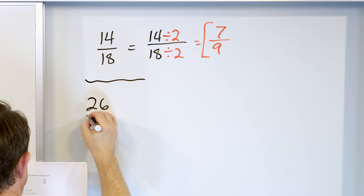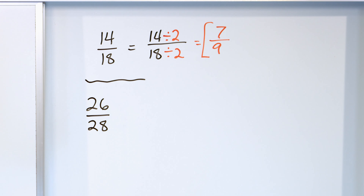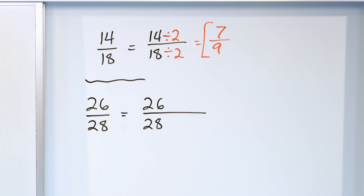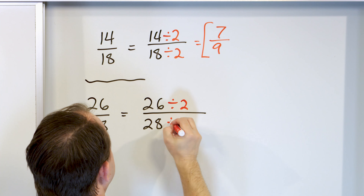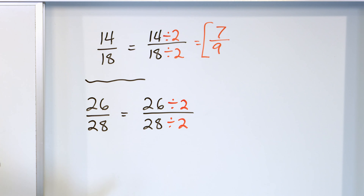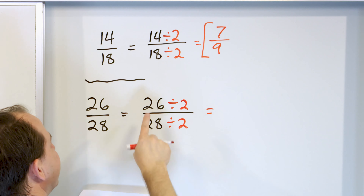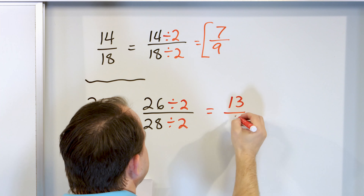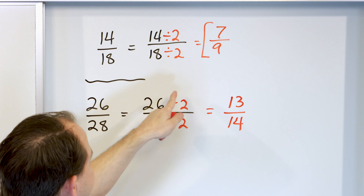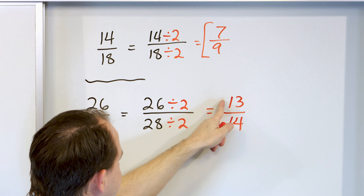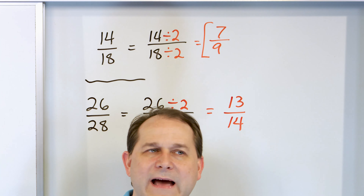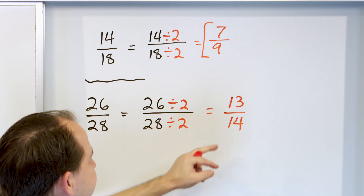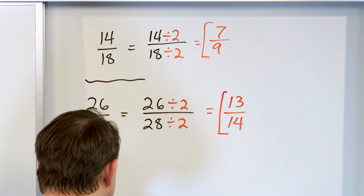What about twenty-six twenty-eighths? Again, I see that they're both even numbers. I'm going to divide the top and bottom by two. These are a little tricky because they're larger numbers, but twenty-six divided by two is thirteen, and twenty-eight divided by two is fourteen. If you're not sure, you can go off to the side and work through the division. You get thirteen-fourteenths, and that is the final answer — I cannot simplify it any further.